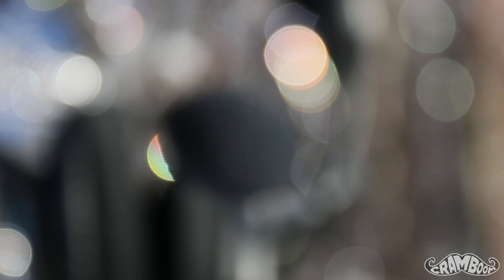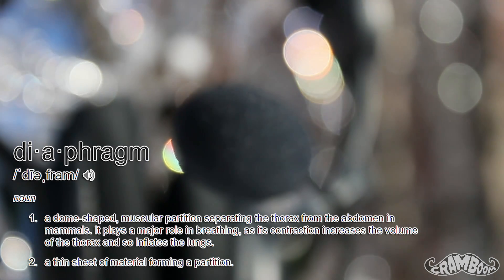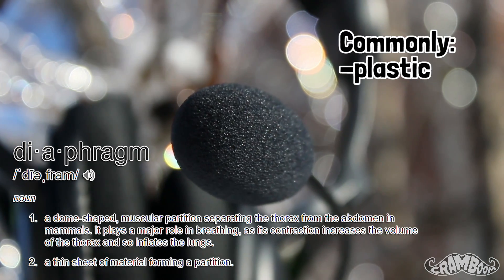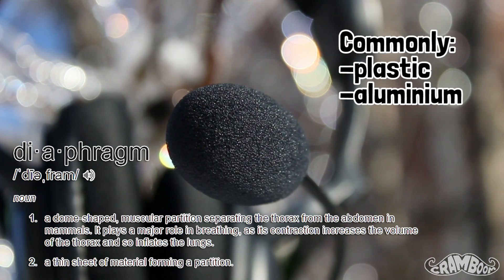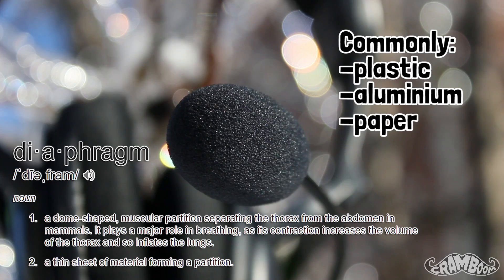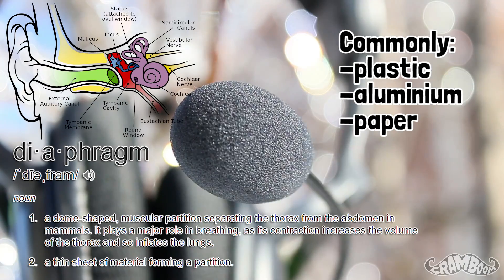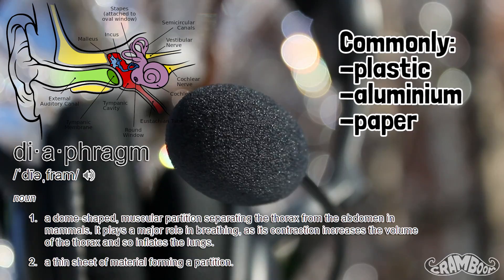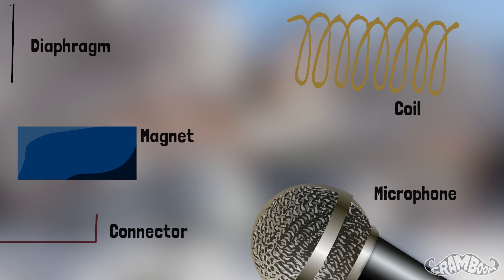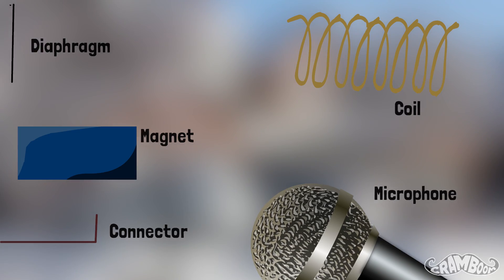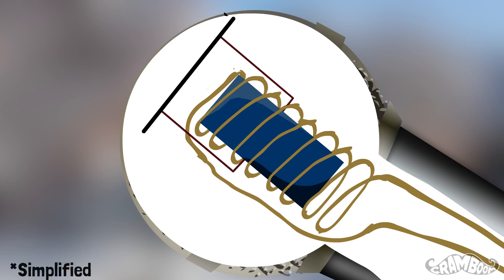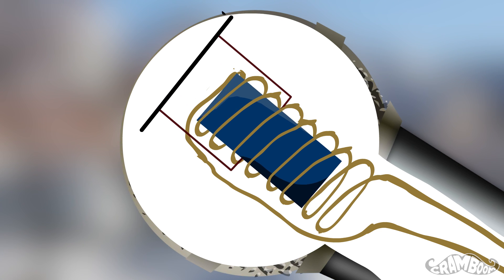There are many kinds of microphones, but one thing they all have in common is called a diaphragm — a thin piece of material, commonly plastic, aluminum, or paper. This acts in a similar fashion to our eardrums: it vibrates because of sound waves. But our eardrums don't convert sound into electricity.